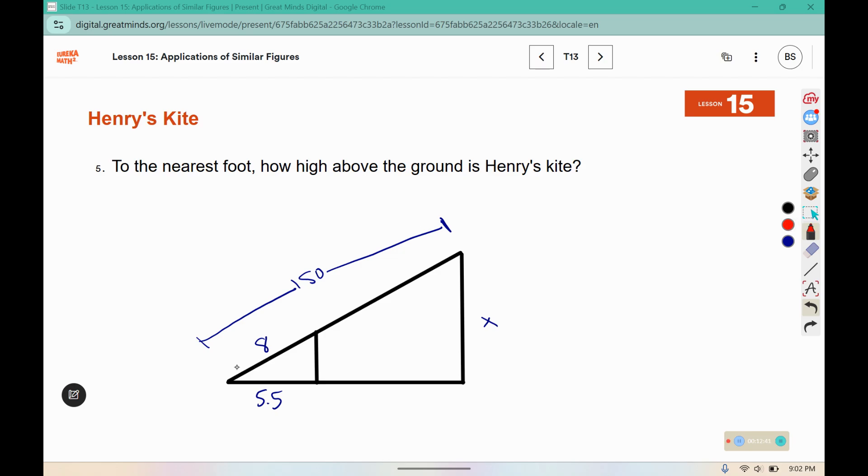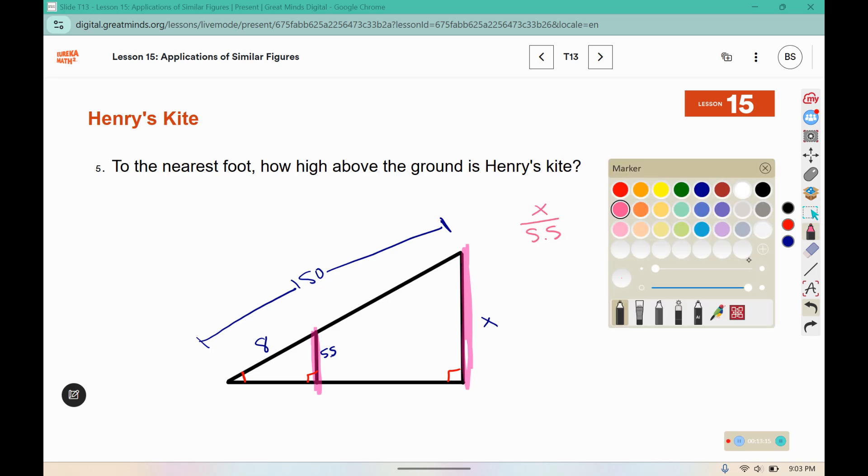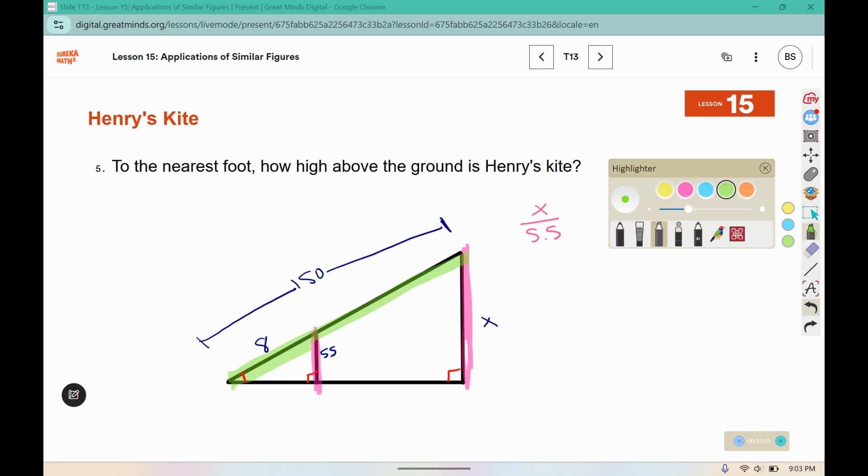We know that these angles here in the corner are the same in both of the triangles because they overlap, and we also know that the boy is standing at a right angle, and then that height will be perpendicular to the ground as well. So we can compare the distance on the ground, the height of the boy with the height of the kite, and the distance of the string for the whole kite to the point where the boy is standing.